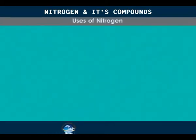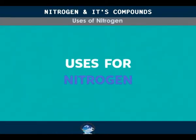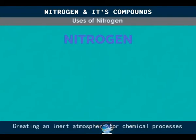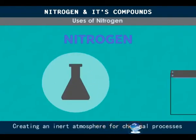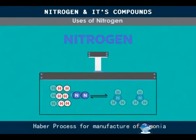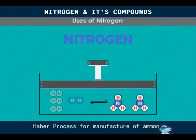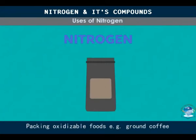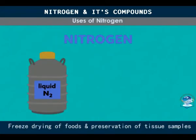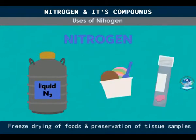Some of the important uses of nitrogen are: creating an inert atmosphere for chemical processes, the Haber process for the manufacture of ammonia, gas chromatography, packing oxidizable foods such as ground coffee, and liquid nitrogen can be used for the freeze-drying of foods and preservation of tissue samples.